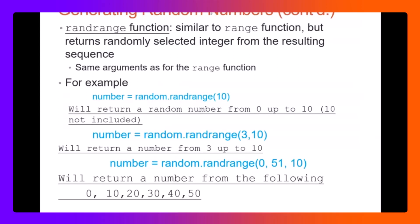There are many ways to generate random numbers. random.randrange() is similar to the range function but returns a randomly selected integer from the sequence. It uses the same arguments as range. So randrange(10) will return a number from 0 up to 9 — 10 is not included, just like range in a for loop.